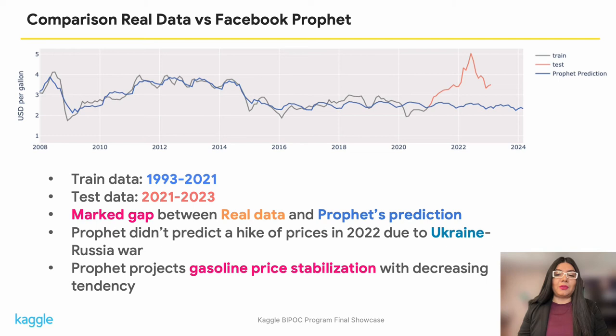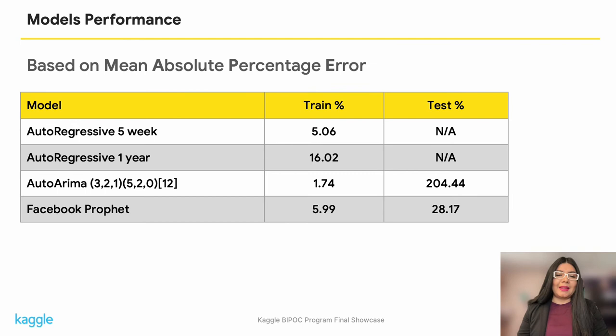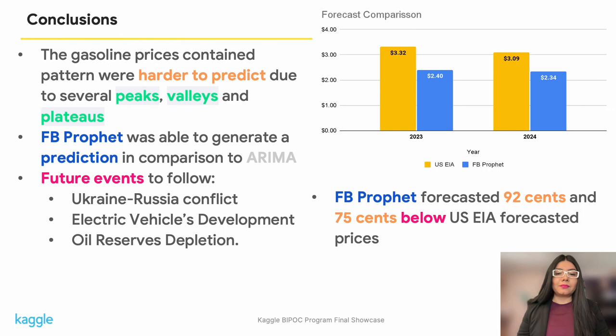Fortunately, a prediction was possible through Facebook Prophet, which projects gasoline prices as stable with a lower tendency. Although this forecast is not perfect, it's not terrible at all, as we'll see in the following table. Based on the mean absolute percentage error, autoregressive models were the most effective forecasting method with errors of 5% and 16%, followed by Facebook Prophet, which achieved 5.99% on training data and 28% on testing data.